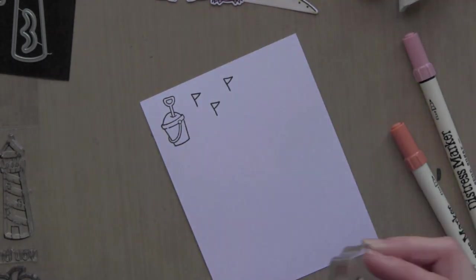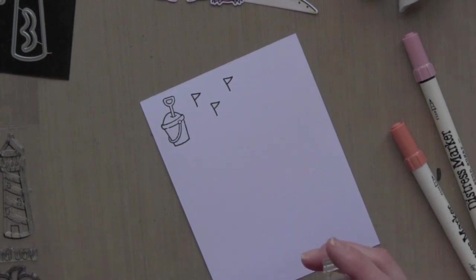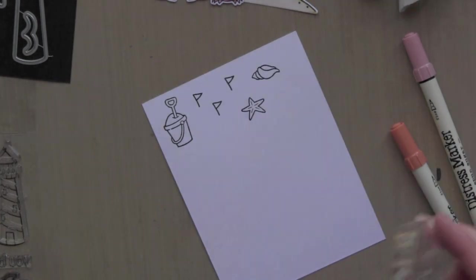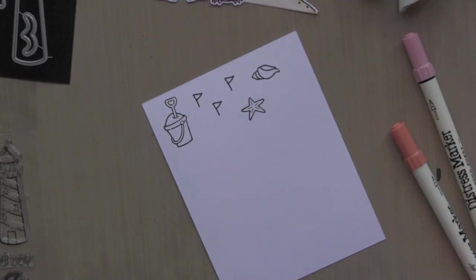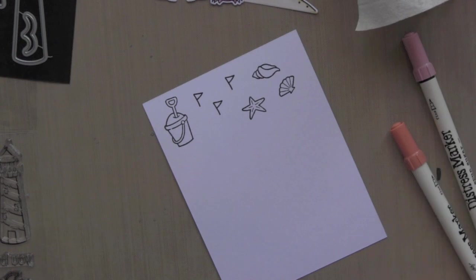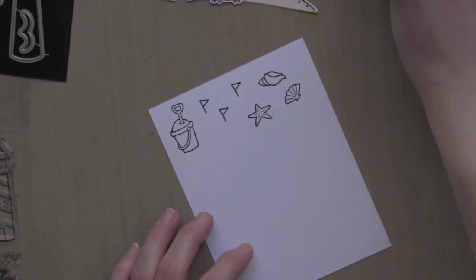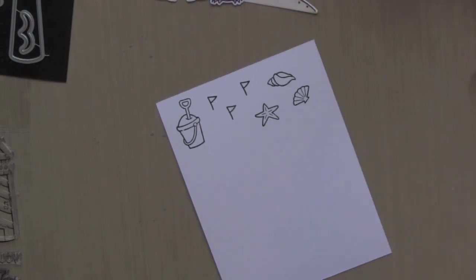I'm stamping the images from the stamp set on some Tim Holtz watercolor paper. I'm using the smooth side of the watercolor paper. One side is more rough, like traditional watercolor paper, and the other side is a little bit smoother, which makes it better for coloring.